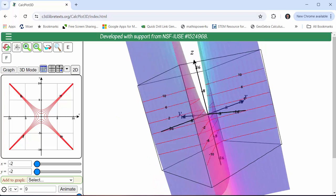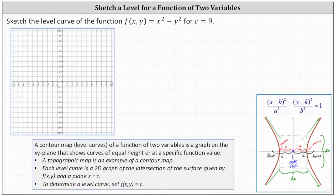And now let's go back to our problem. The equation for the level curve when c equals nine is going to be x squared minus y squared equals nine, which is an equation of a hyperbola.